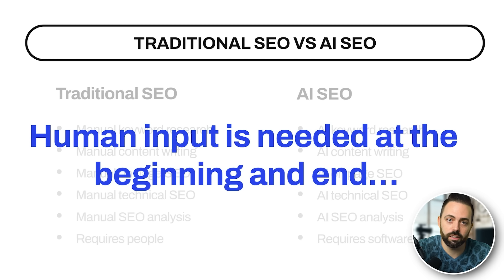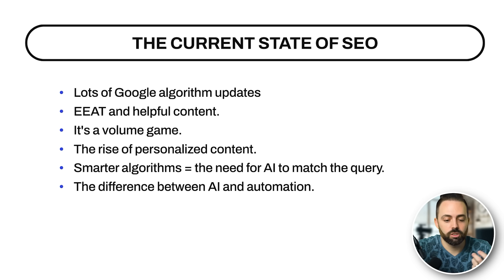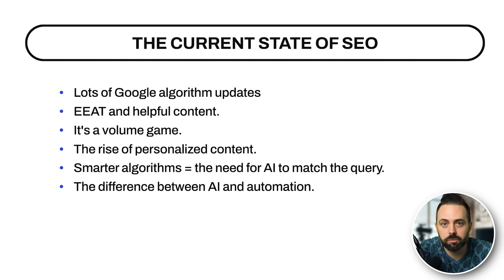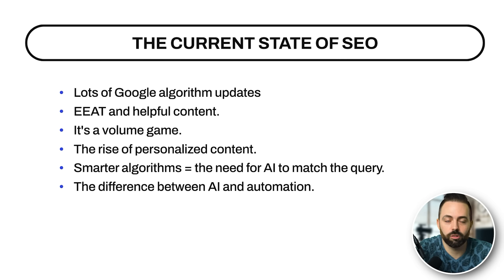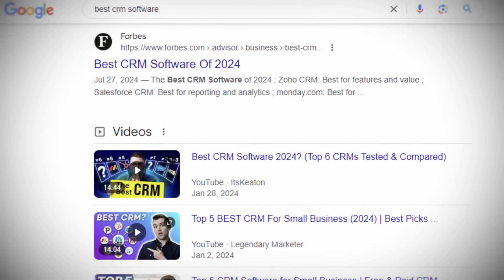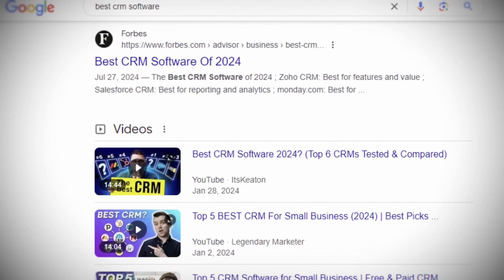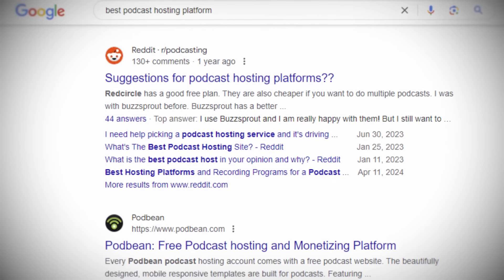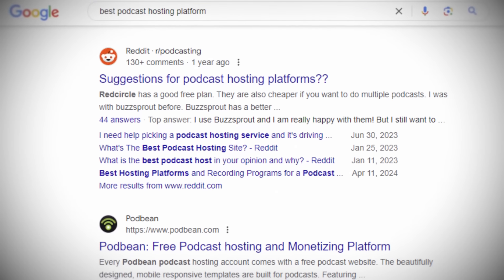We can't have AI dictate our entire strategy or write all of our content without editing or checking it. We have to have human input at the beginning and at the end. We create our keyword strategy with some AI tools but back it up with our own knowledge, then humanize the content at the end. The other current state of SEO is that there have been lots of Google algorithm updates — a ton in 2022, 2023, March 2024, May 2024 — and it's been brutal on some blogs.